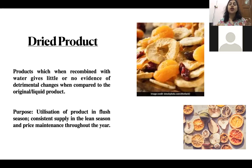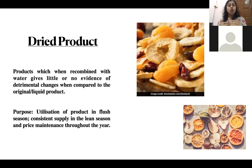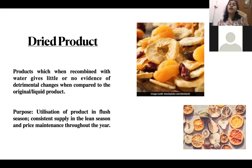Now we'll discuss the purpose of drying any product. In organized farms, the owner tries to keep a regularized schedule for milking and drying off animals. There is always a flush season — a period of excessive production — and a lean season, when there is less production. The production in the farm, whether fruits and vegetables or milk, is always increasing or decreasing.